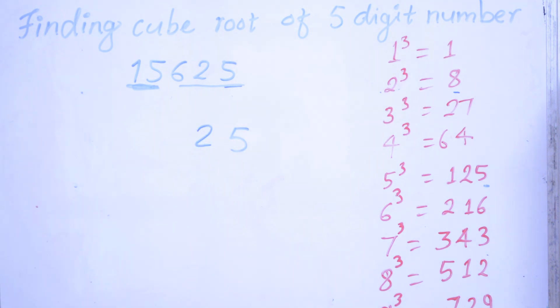Let's check the answer. 25 times 25 times 25. So 25 times 25 is 625 times 25, which is 15,625. So the cube roots of 15,625 is 25. Thank you for watching this video.